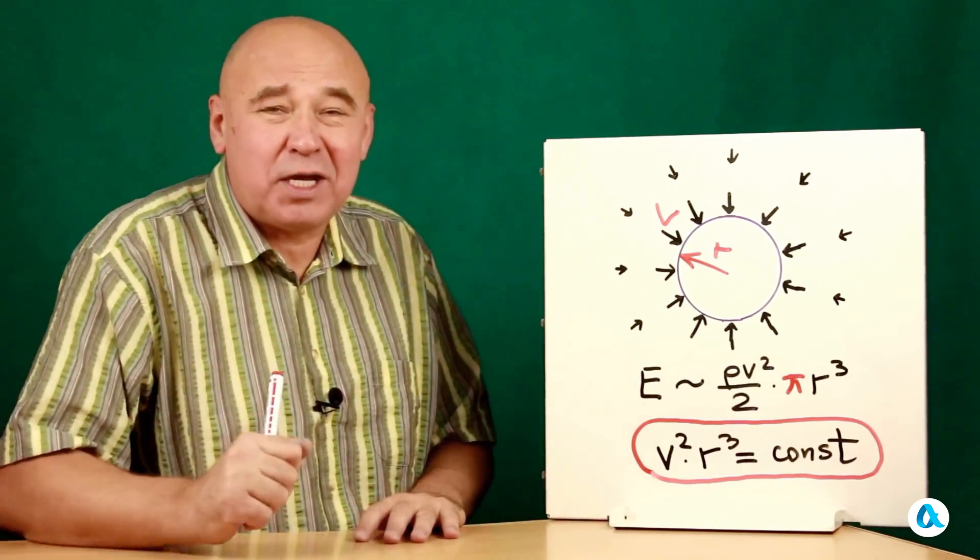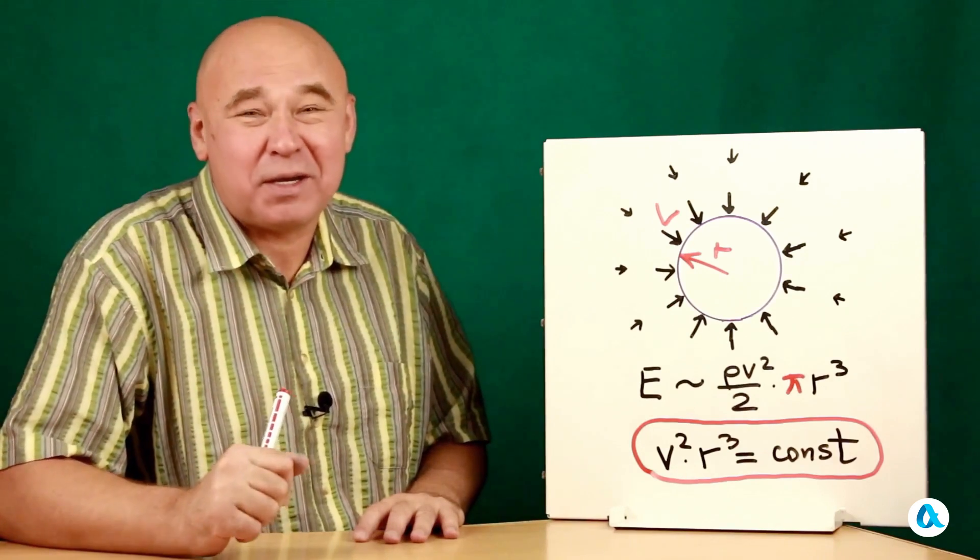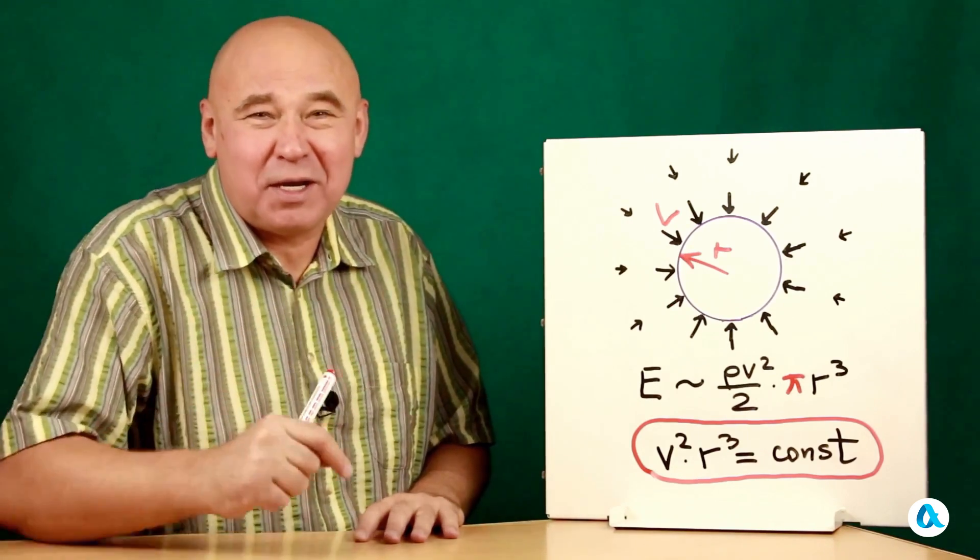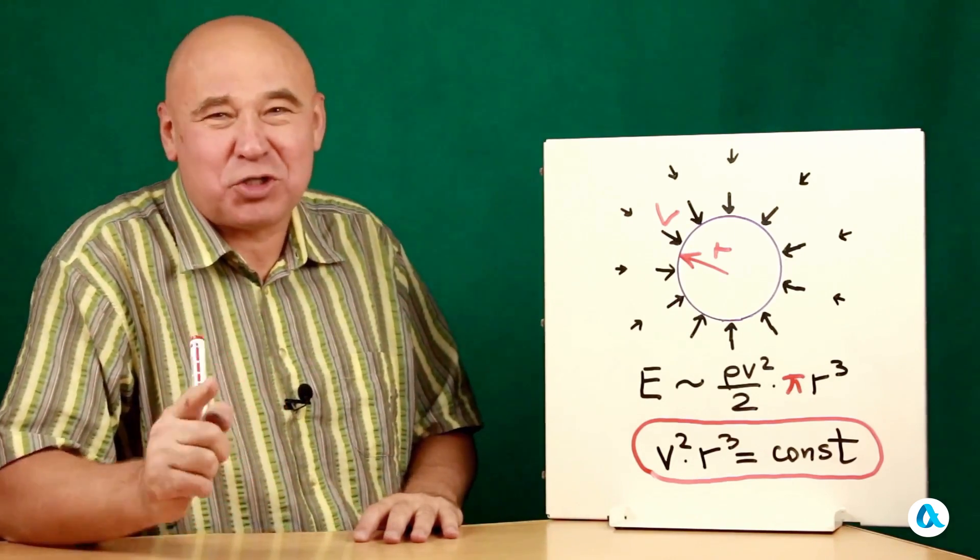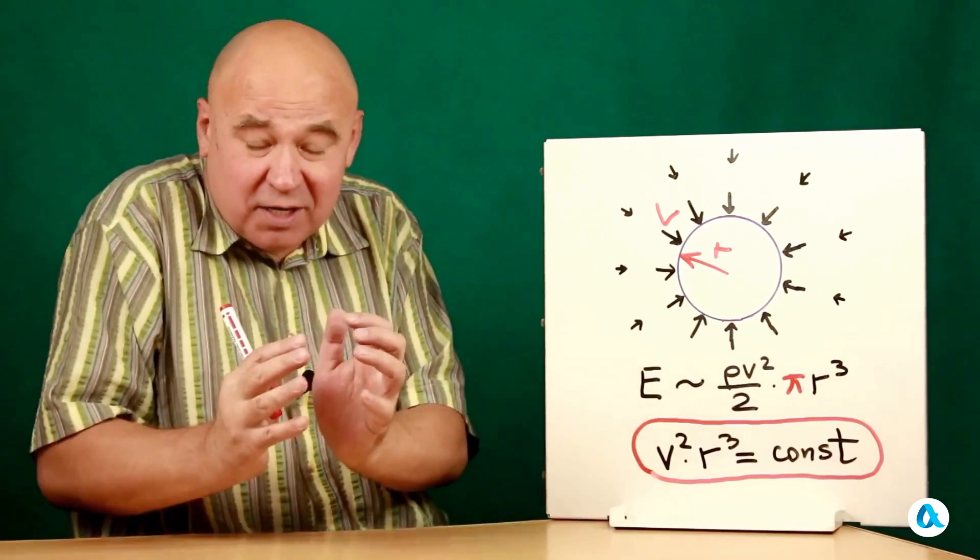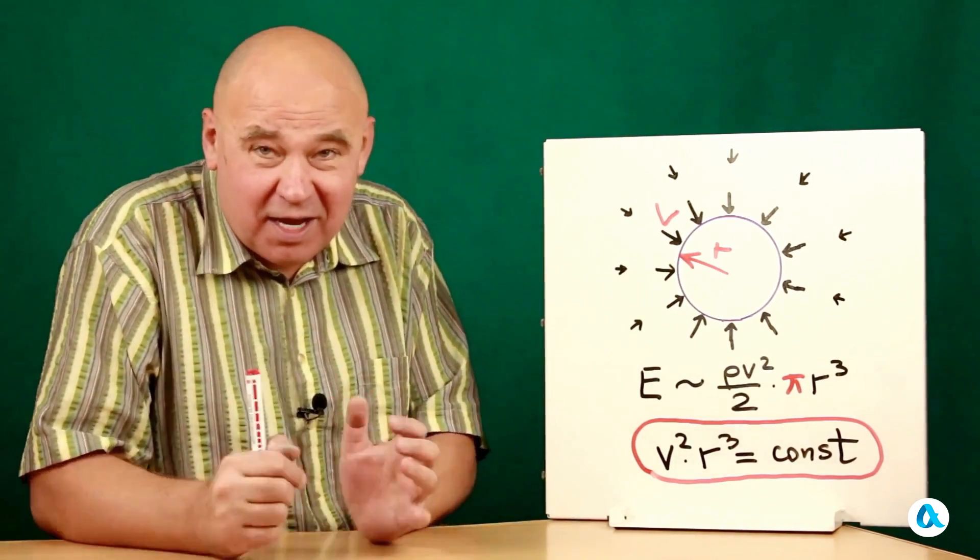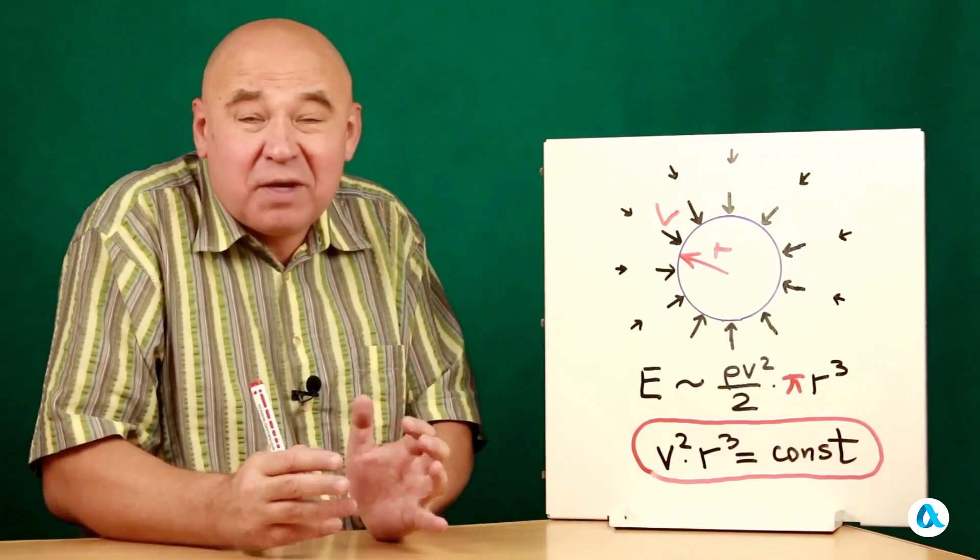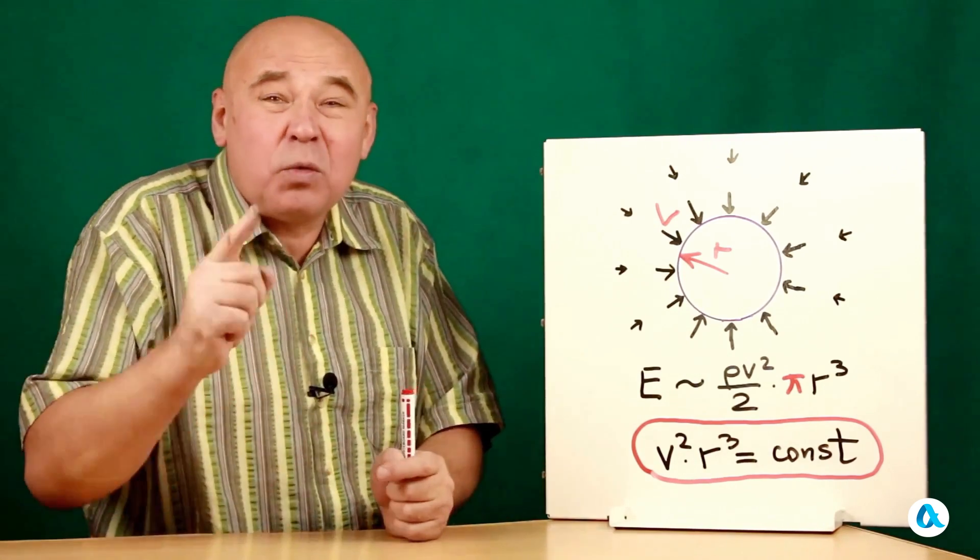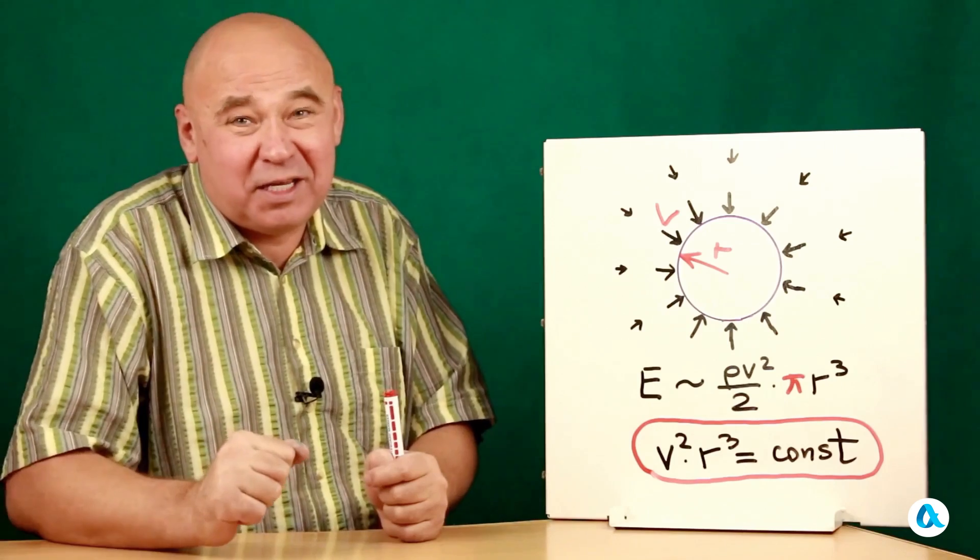But actually what we need is not speed, but the square of the speed, because it is the square of the speed that is involved in the dynamic pressure of the liquid. So the radius decreased by a factor of 10 and the dynamic pressure increased by a factor of 1,000 during the course of the process. Well, this is essentially the combined impact.